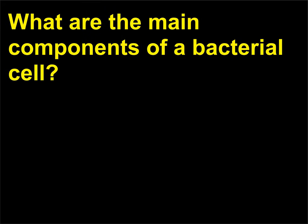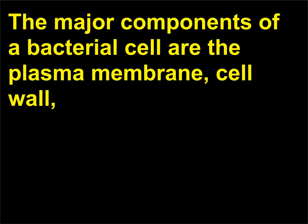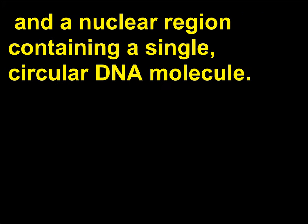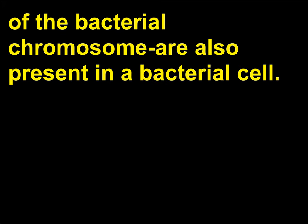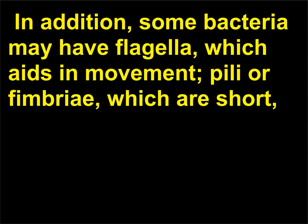What are the main components of a bacterial cell? The major components of a bacterial cell are the plasma membrane, cell wall, and a nuclear region containing a single, circular DNA molecule. Plasmids — small circular pieces of DNA that exist independently of the bacterial chromosome — are also present in a bacterial cell. In addition, some bacteria may have flagella, which aid in movement, and pili or fimbriae, which are short, hair-like appendages.